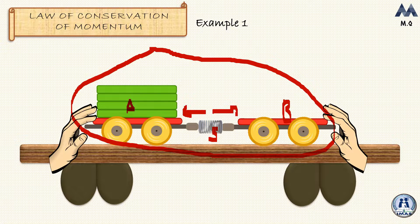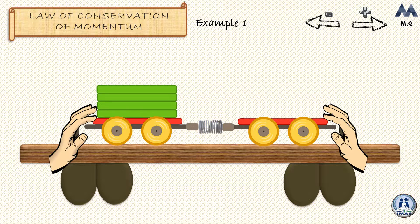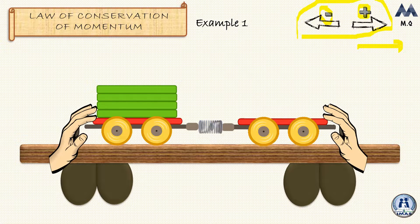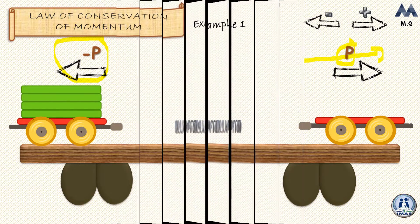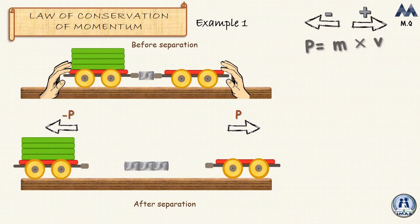Before analyzing what happens, we need to set a direction standard: any momentum or vector quantity to the right will have a positive value, and anything going to the left will have a negative value. This is very important because momentum is a vector quantity with both magnitude and direction. When the hands are released, each trolley moves in opposite directions — one trolley has positive momentum going right, and the other has negative momentum going left.